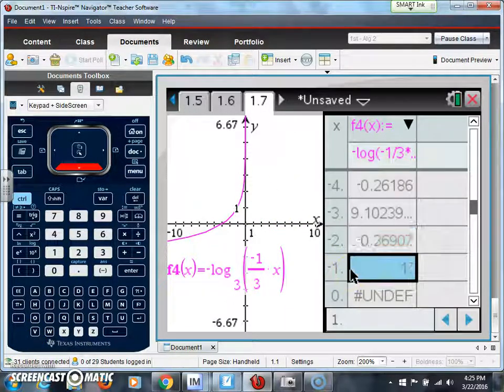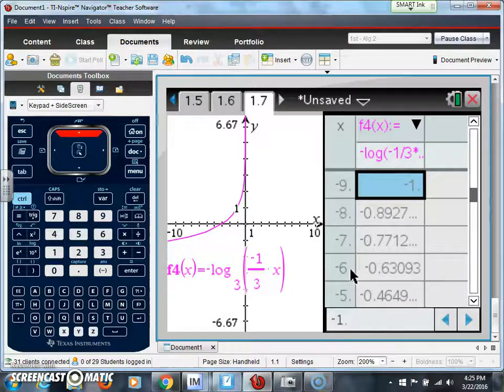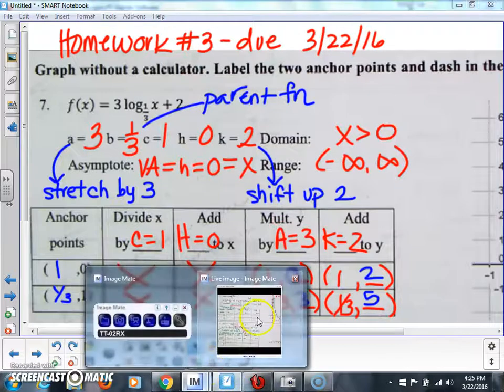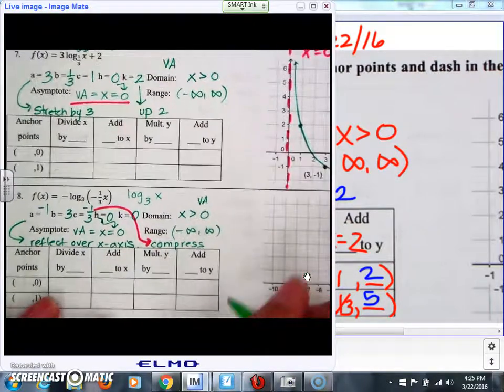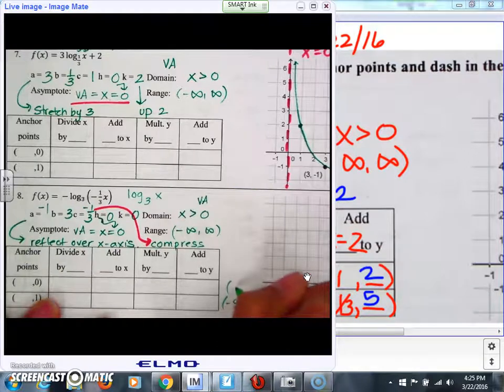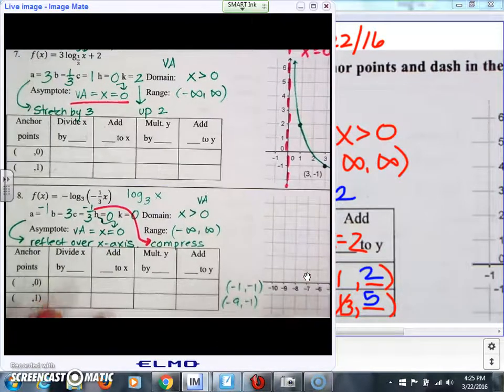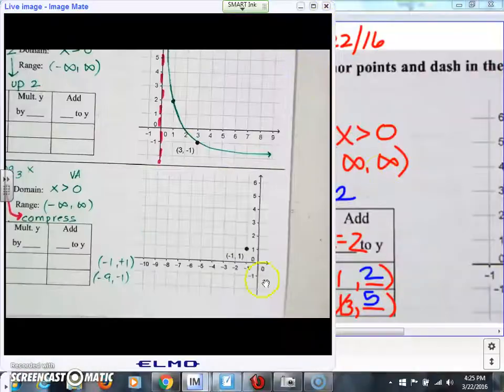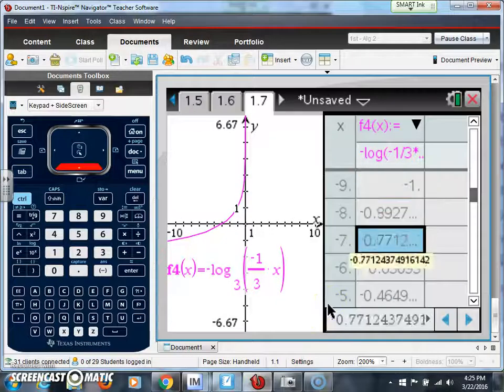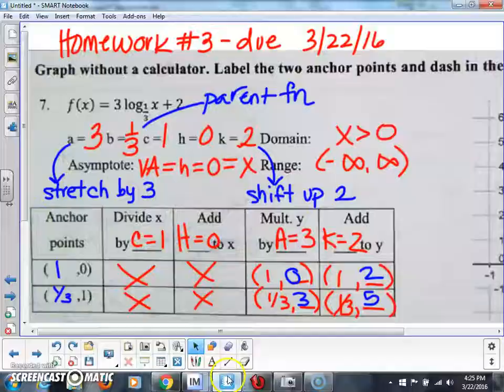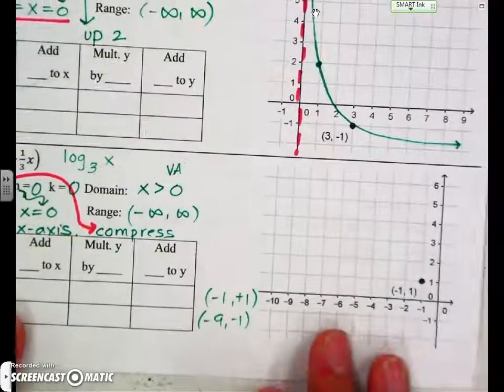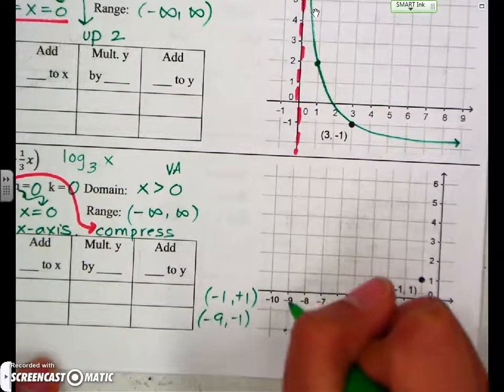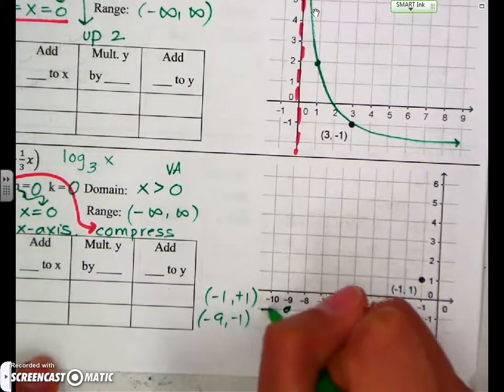When you look at your table, you have an ordered pair at negative 1, 1, and at negative 9, negative 1. So those are the two points we're going to plot. You're going to put negative 9, negative 1, and negative 1, positive 1. So when you plot these points, negative 9, negative 1, and negative 1, 1, and then you plot the two points. And your graph is going to look something like this.